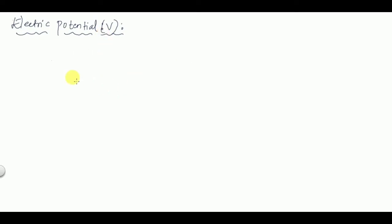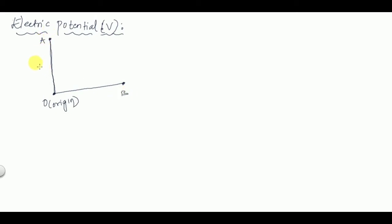So what is electric potential? Before that, let's consider an origin O here, and two points: point A at a distance of RA from the origin, and another point B at a distance of RB from the origin.